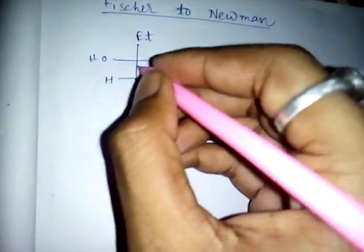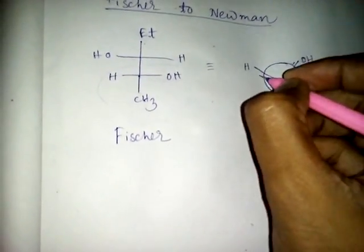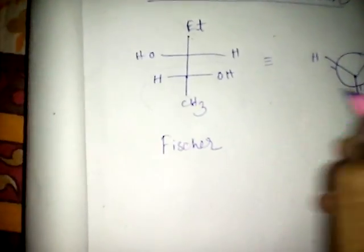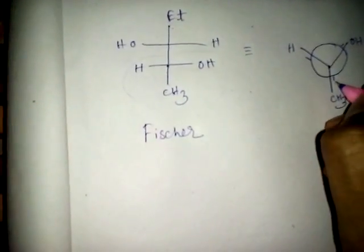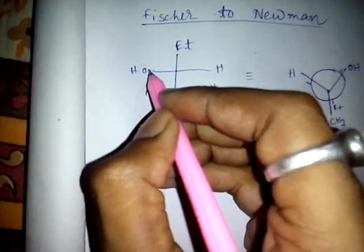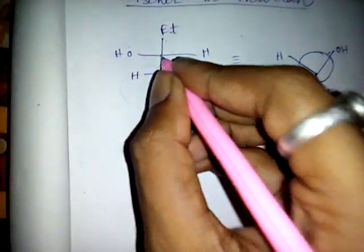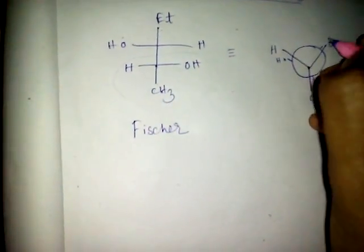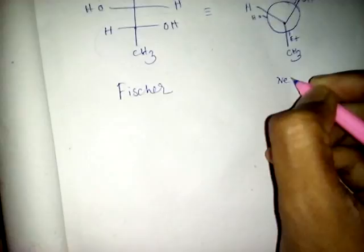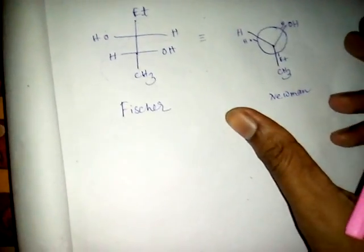Now for the back side carbon atom — this carbon atom is on the back side, so we can't see it as well. So here, on the left side is OH, and on the right side is H.